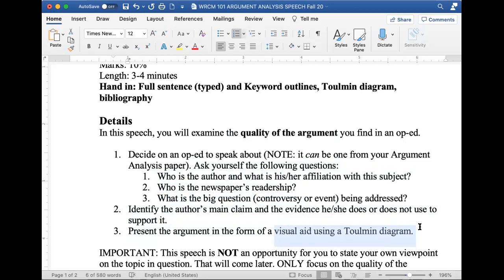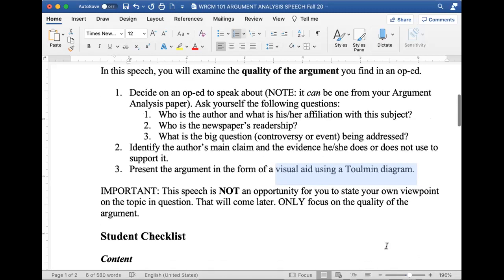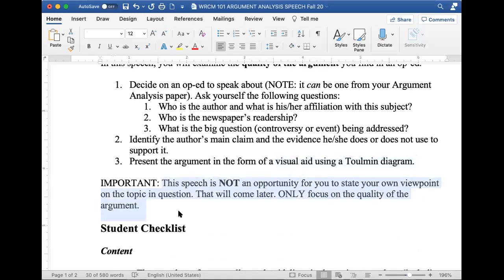So there would be more explanation about it, but this is the requirement. So these three are the requirements of this particular assignment. Now, this is important. The speech is not an opportunity for you to state your own viewpoint on the topic in question. Don't start telling what you think about that topic. Because you are evaluating the argument of that author. You are not giving your argument. That will come later. For some of the later assignments, you will get a chance to give your own position with reference to that particular topic. That is, in fact, the last assignment that you have to do later. Only focus on the quality of the argument.